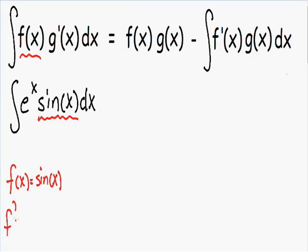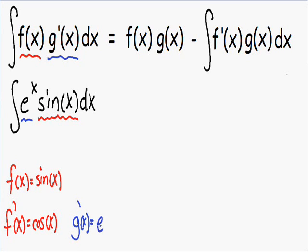Our f prime of x is equal to the derivative of the sine of x, which is the cosine of x. Now let's pick our g prime of x. The only thing left in our integral is e to the x, so we know that has to be our g prime. So g prime of x is equal to e to the x. And if we know g prime is e to the x, we can take the integral of that to find g of x. The integral of e to the x is also e to the x.